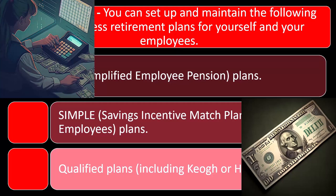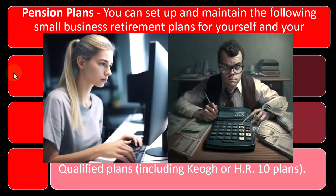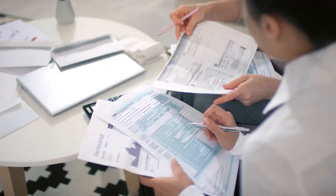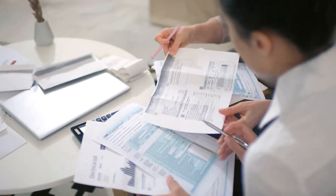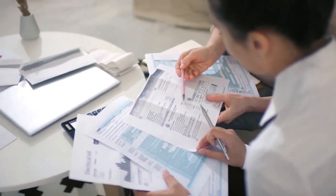If you do tax preparation, you might come into the situation where the IRA is often the last question you ask somebody, because whether or not they can put money into an IRA might be dependent upon other factors. Fortunately, the tax code allows us to put money into an IRA — if we're allowed to — past the due date or the end of the year, past December 31st, 2022.